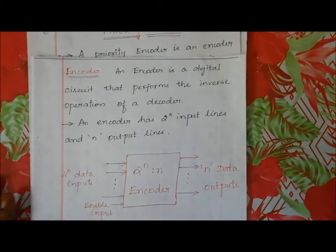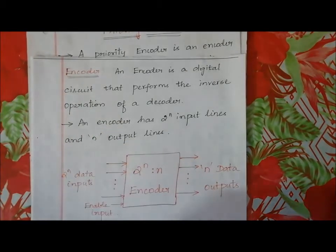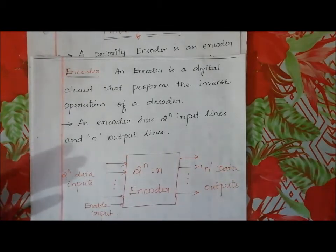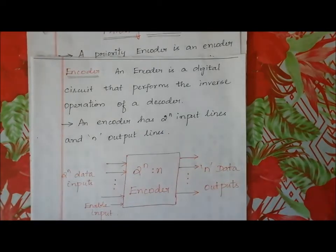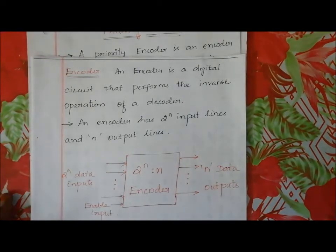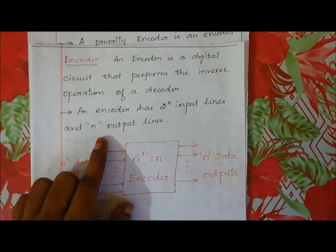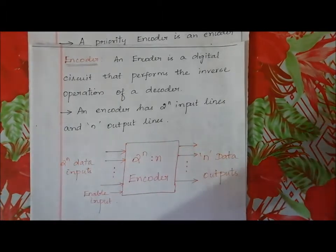In this video we are going to see the topic encoder. The inverse process of decoder is encoder. An encoder is a digital circuit that performs the inverse operation of a decoder. An encoder has 2^n input lines and n output lines.